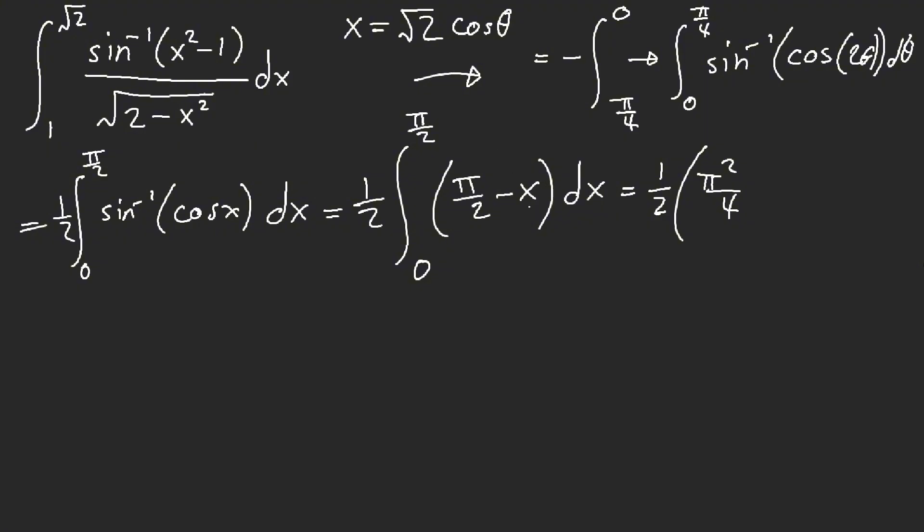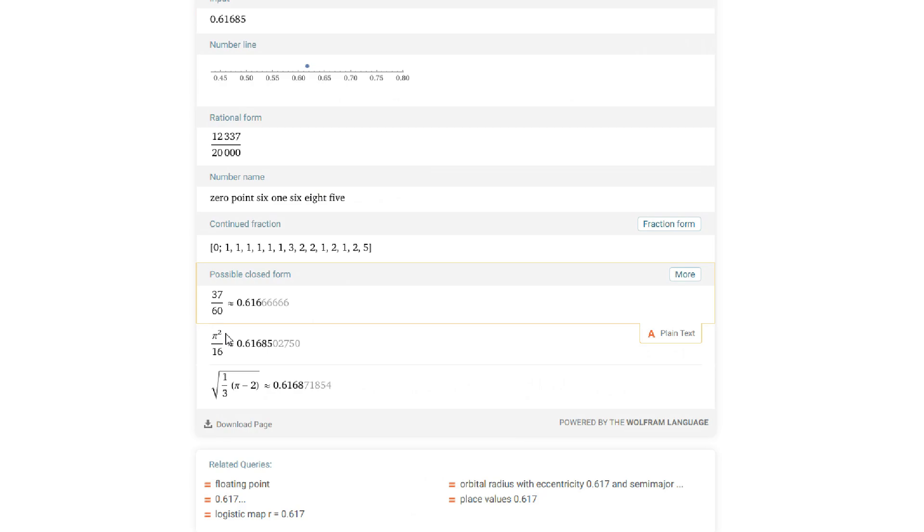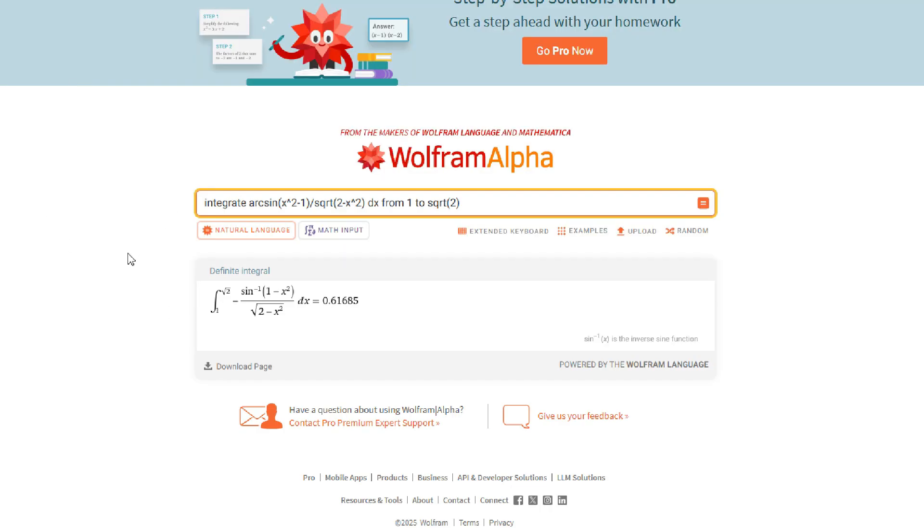I got a half of pi square over four minus this x square over two. It's like what, pi square over eight? Oh, pi square over eight. Yeah. And so I end up with pi square over 16, in which I do have it checked up. Yes, pi square over 16. Okay?